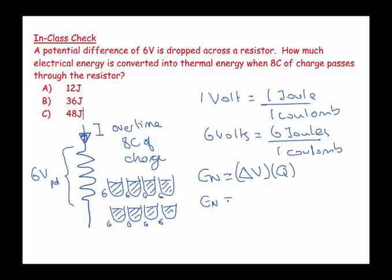say my energy is equal to 6 joules per coulomb multiplied by 8 coulombs, so my energy is equal to 48 joules.